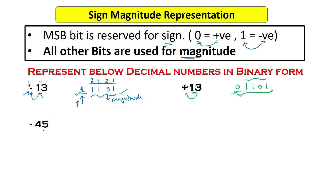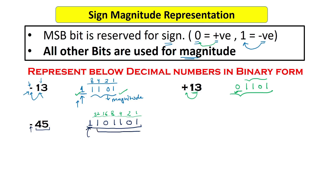Next example: minus 45. To represent minus 45, first write the binary form of 45, which is 101101. Then at the sign bit, put 1 for negative. So there are total 7 bits representing minus 45 — the sign bit plus the 6 magnitude bits. The sign bit indicates this is a negative number and the remaining part gives the magnitude.